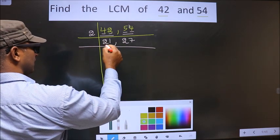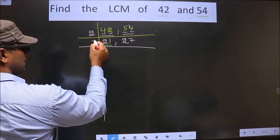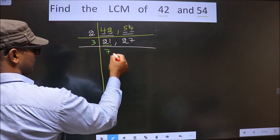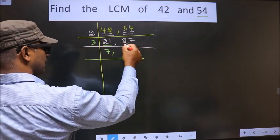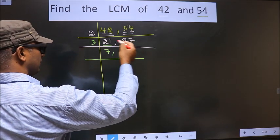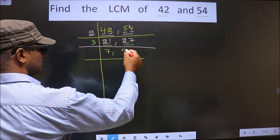Now, here we have 21. 21 is nothing but 3, 7 is 21. The other number is 27. When do we get 27 in 3 table? 3, 9 is 27.